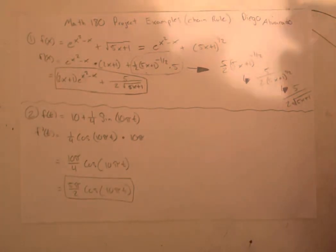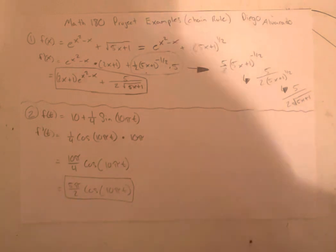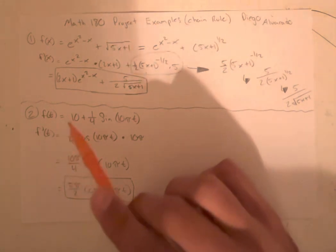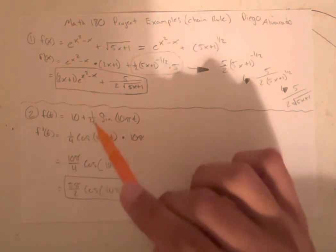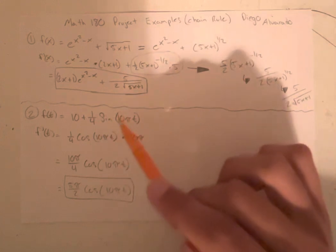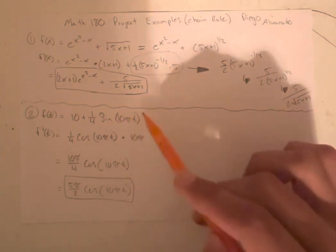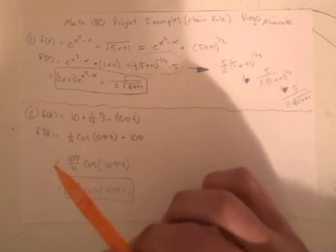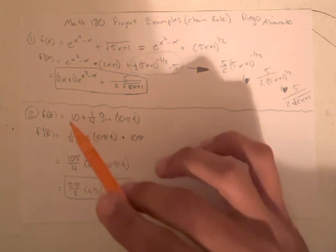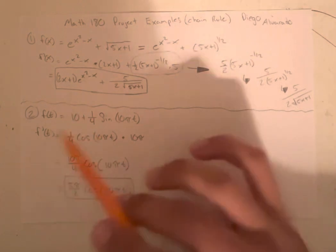The second one is a little bit more simple, in my opinion. This one is 10 plus 1 4th sine. And inside sine, there's 10 pi t. So when we're taking a derivative, the derivative of a constant is nothing. It's just 0, so it goes away.